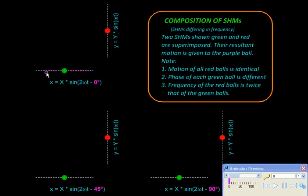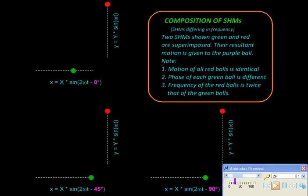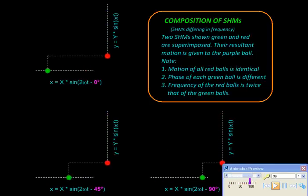Let us see one more example. In this example too we have pairs of particles executing SHM — three such pairs. All these red particles will be executing identical SHMs: same amplitude, same frequency, and even the same phase. But these green particles are given twice the frequency of the red ones, so when the red particle completes one oscillation the green would complete two. The phase is also successively varied — for example, here the two are in phase, with a phase difference of zero degrees; here the phase difference is 45 degrees; and in the third case it's 90 degrees.